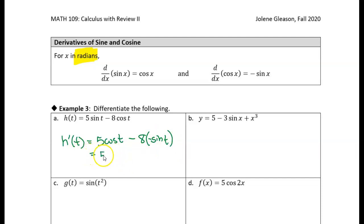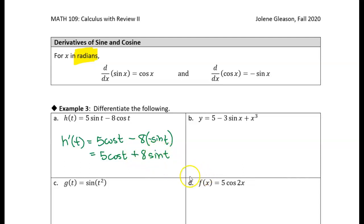Or what you can do is just multiply negative 8 times negative one and get positive 8, then write sine of t. That's a very simple simplification that might save you some headache — if you have to use this function later, you won't confuse 8 minus sine of t with 8 times negative sine of t. So just be careful there.